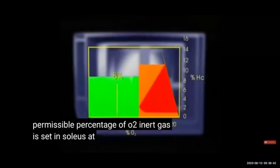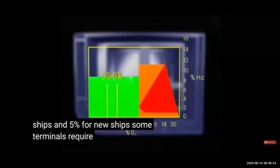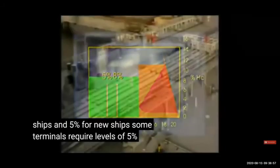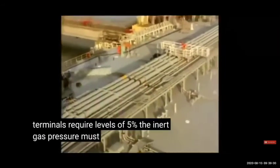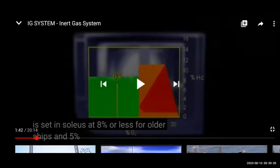Suppose the hydrocarbon content in the tank is around 14%. The inert gas oxygen is around 5% for new ships and 8% for old ships. If we start putting air directly into the tank, oxygen will keep increasing and we will pass into the flammable mixture zone. We don't want to enter the flammable mixture — that's why we put inert gas. Oxygen will not increase but hydrocarbon will reduce, and oxygen stays less than 5%.